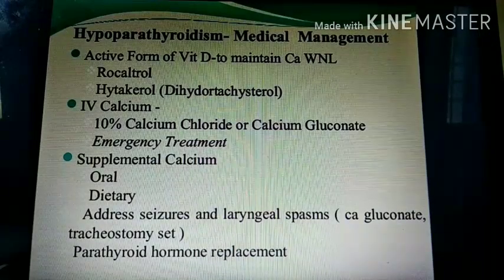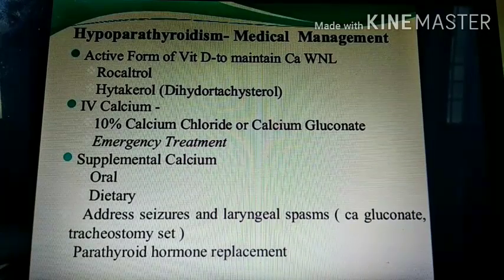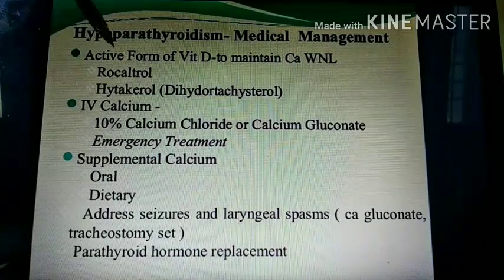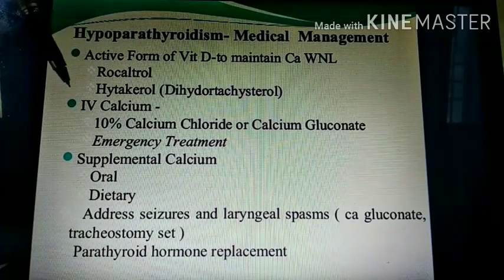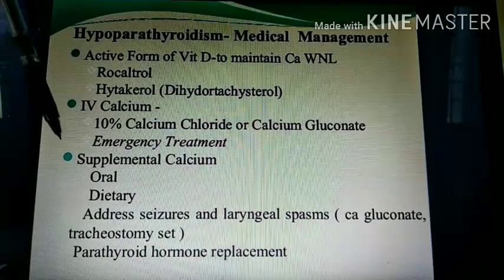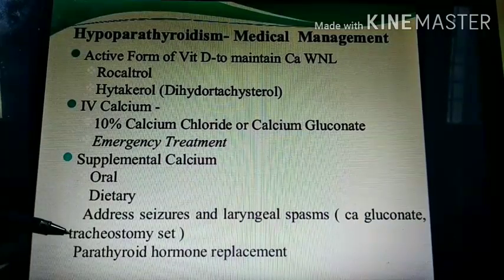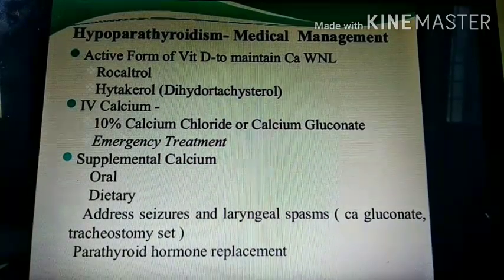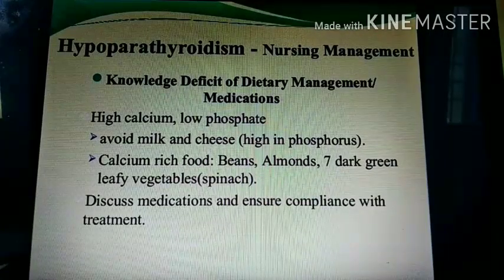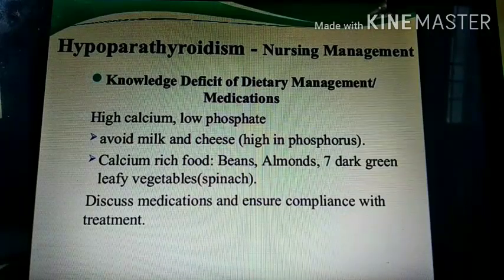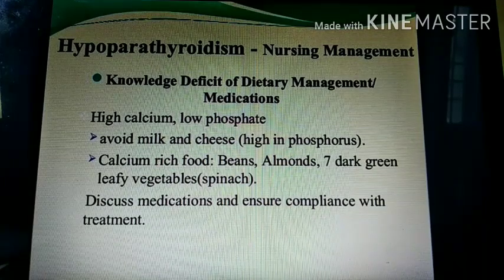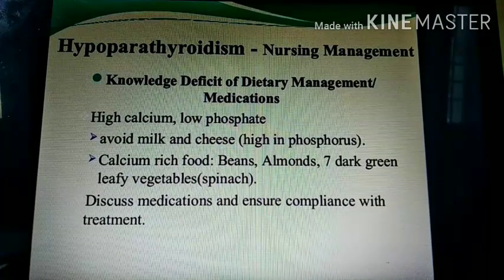Management of hypoparathyroidism includes active form of vitamin D, such as rocaltrol, to maintain calcium within normal limits. High-dose calcium such as 10% calcium chloride or calcium gluconate can be given intravenously. Supplemental calcium may be given orally or through diet. Parathyroid hormone replacement therapy is given because PTH levels are decreased. Nursing management includes knowledge deficit related to dietary management and medication — high calcium, low phosphate diet; avoiding milk and cheese which are high in phosphorus; and consuming calcium-rich foods such as almonds and green leafy vegetables.